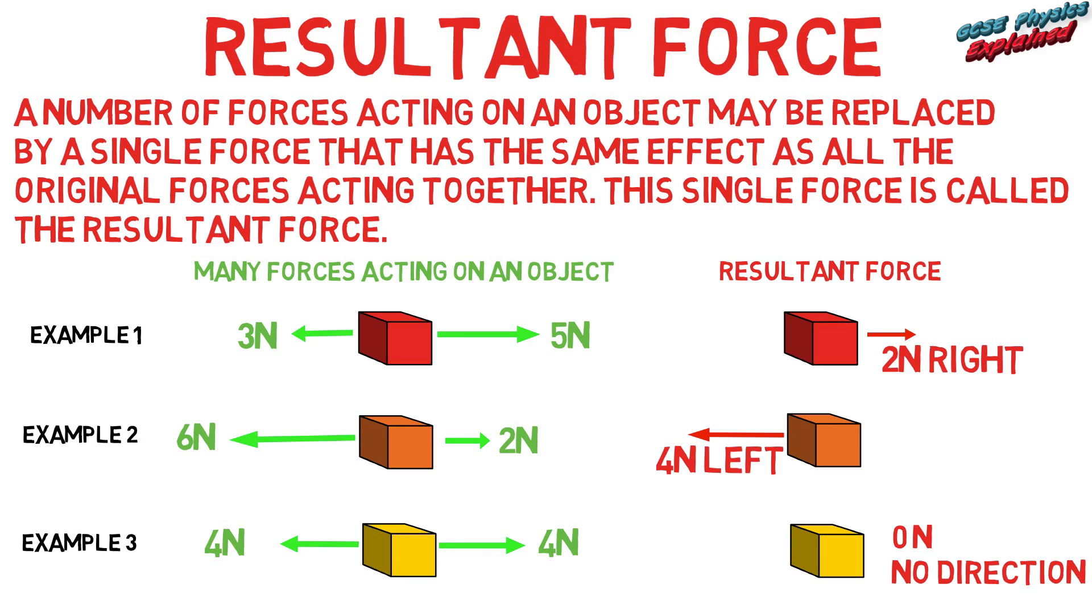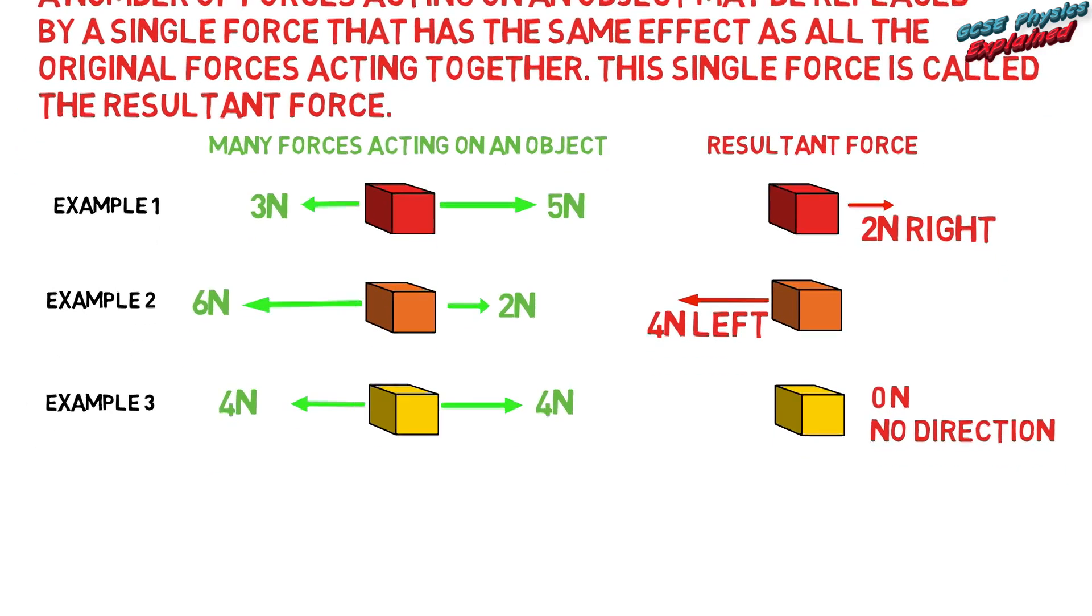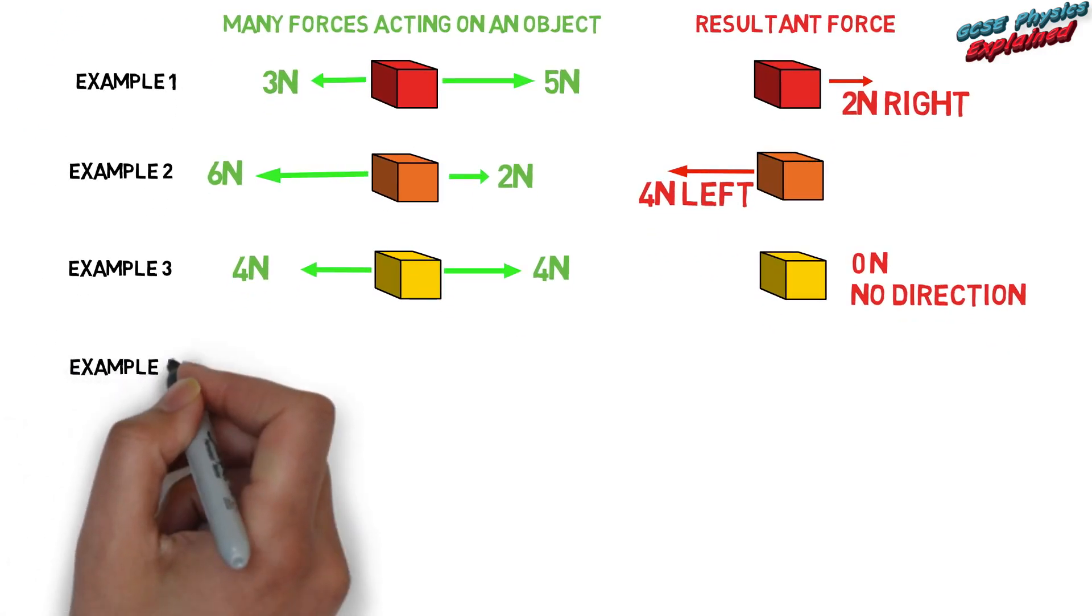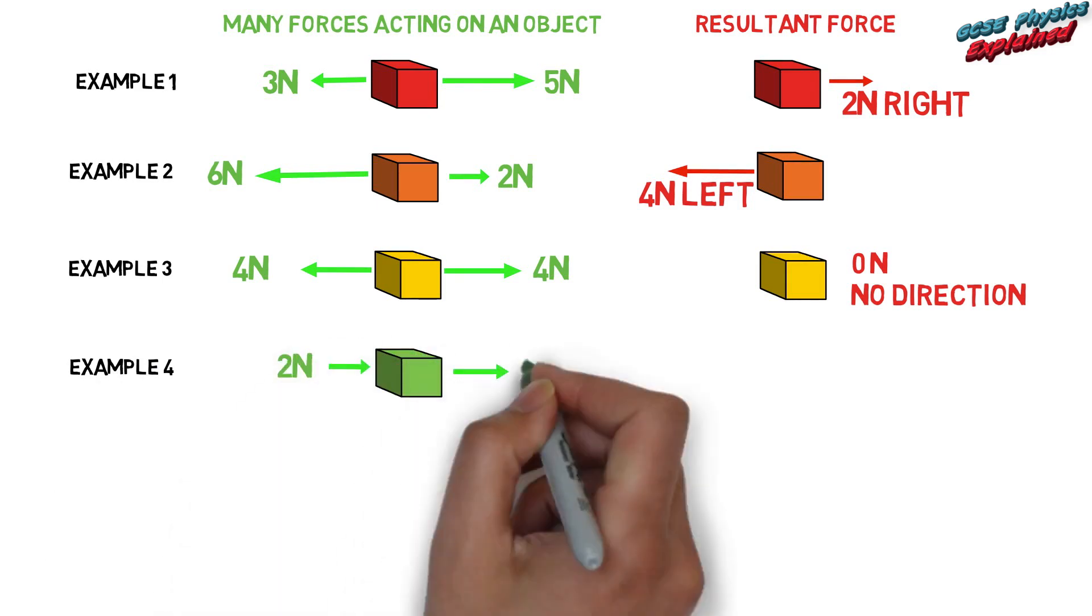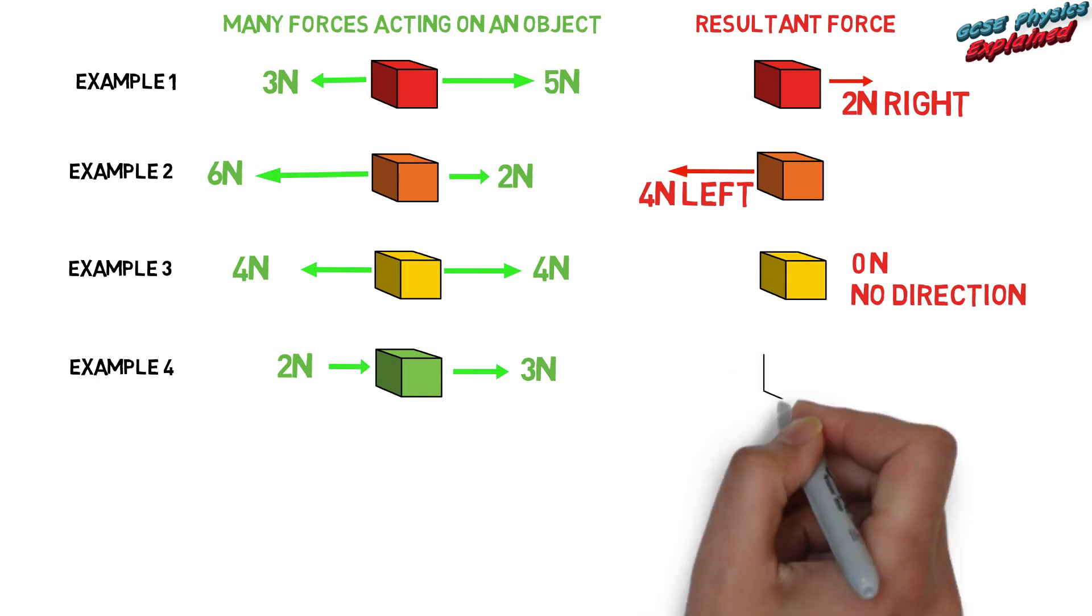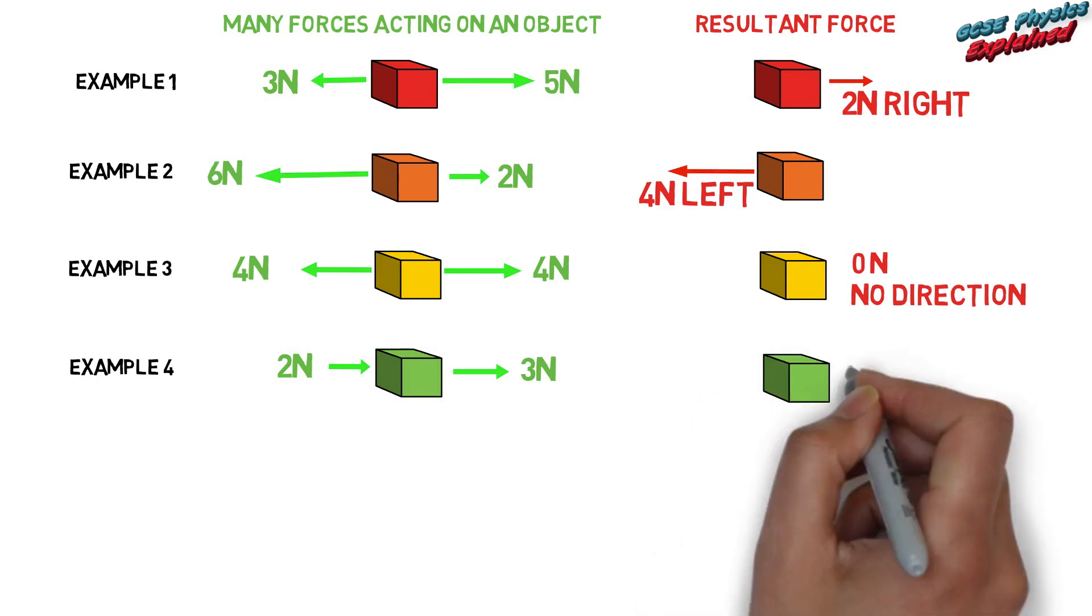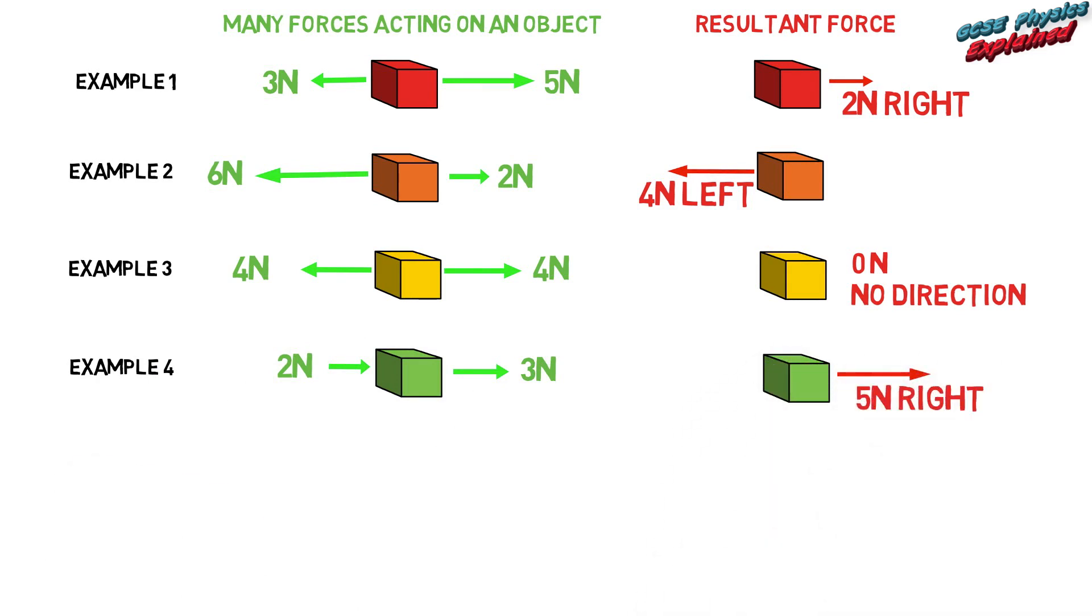If the forces acting on an object are in the same direction then they add together. Let's look at some examples of that. Example four: Two newtons right, three newtons right. Resultant: five newtons to the right.